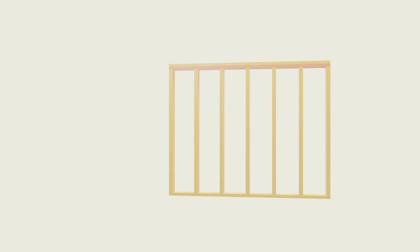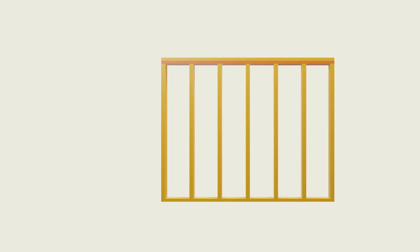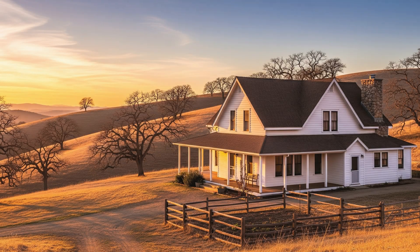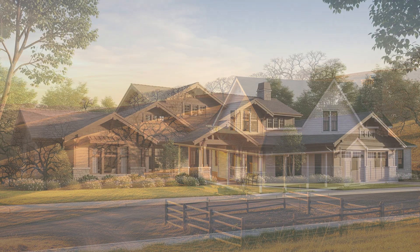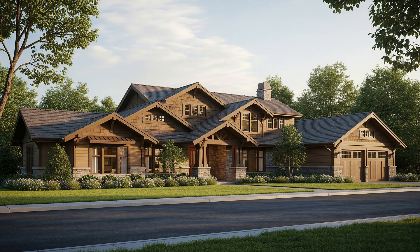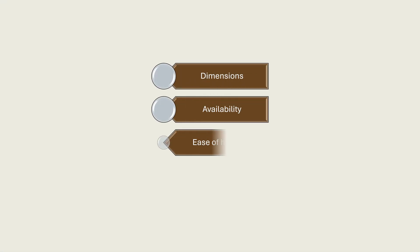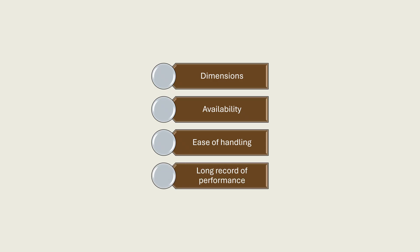In residential construction, few components are as familiar or as quietly essential as the 2x4 stud. For more than a century, this simple piece of lumber has formed the backbone of American wood-framed walls, shaping everything from modest starter homes to complex architectural designs. Its dimensions, availability, ease of handling, and long record of performance have made the 2x4 the default choice for most non-engineered wall framing.